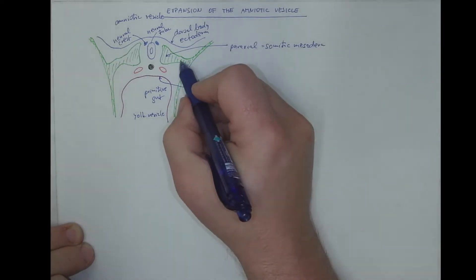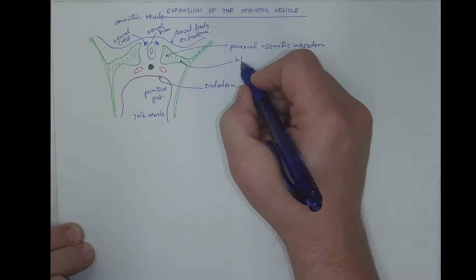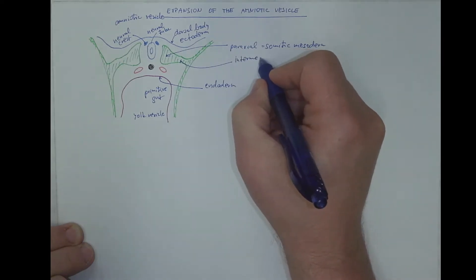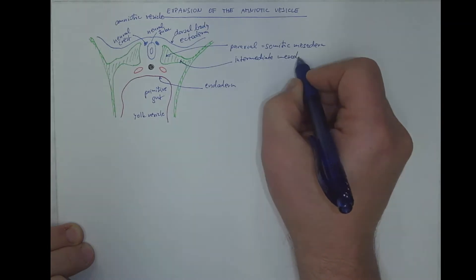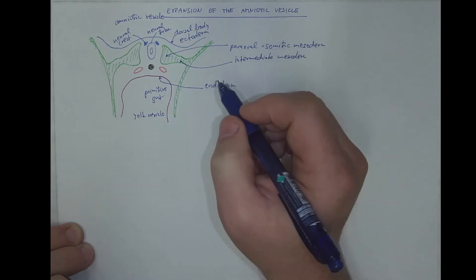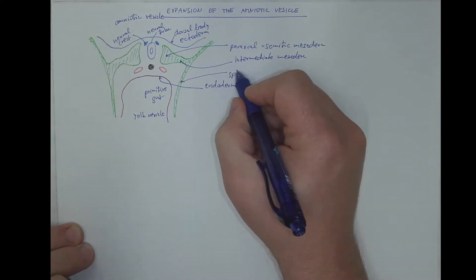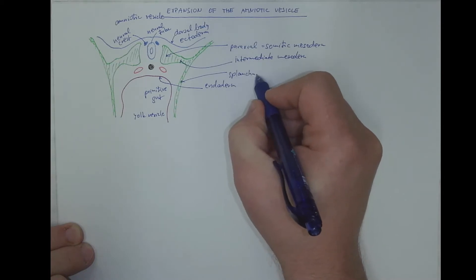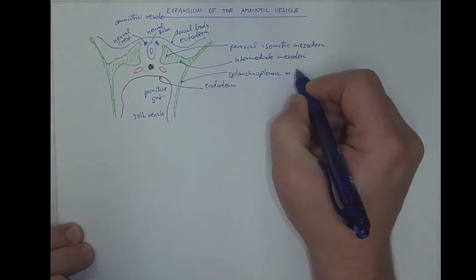This is the intermediate mesoderm. And this is the lateral plate mesoderm, with the two layers, with the splanchnopleuric mesoderm.